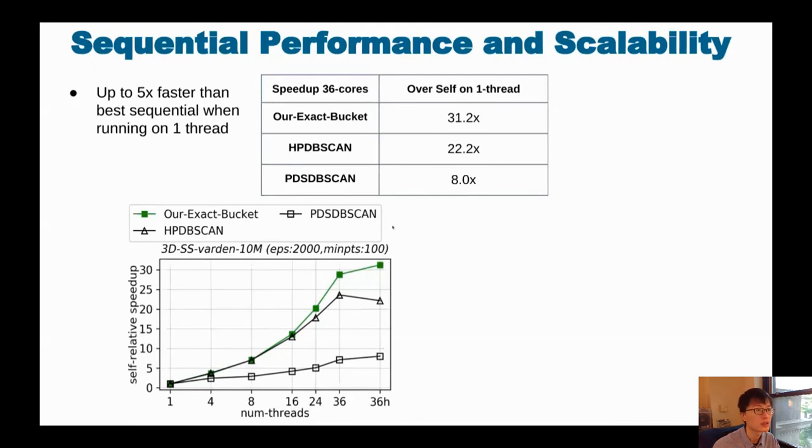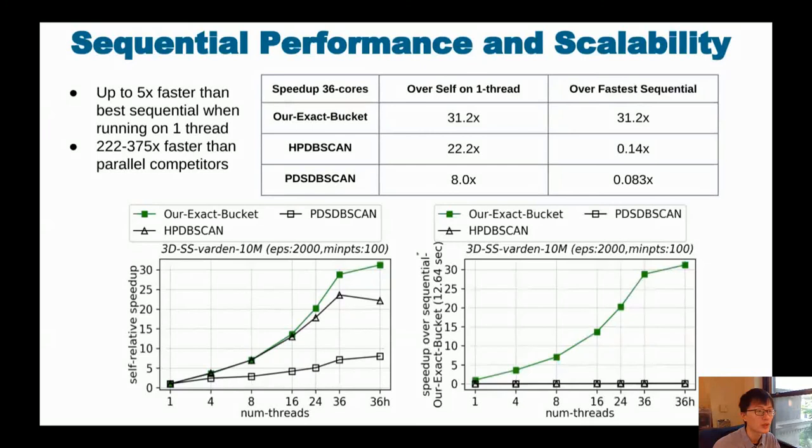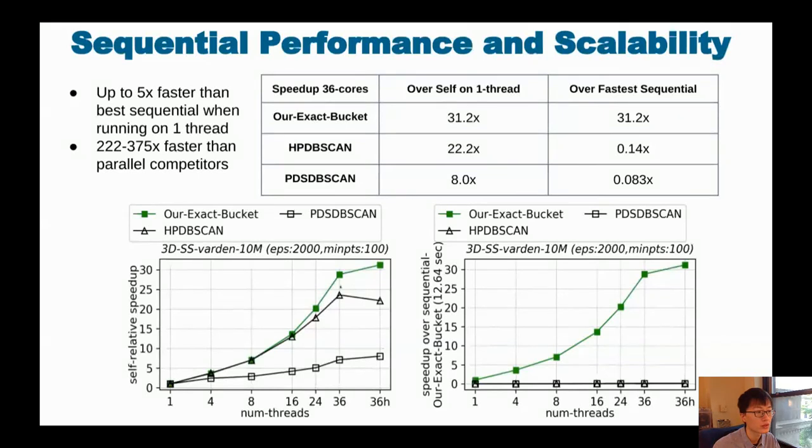And now let me show a second plot. The second plot still shows speedup, but it shows the speedup over the best sequential implementation. And as we can see when comparing the two plots here, the black lines are reasonable for the left plot, meaning the baselines have reasonable self-relative speedup, but they lay flat on the right plot, meaning the baselines actually do not perform well against the best sequential implementation. They actually did not outperform the best sequential implementation, even when using many cores. This is because the competitor methods, the baselines, are not work efficient. Our method, being work efficient, performs well in both cases.